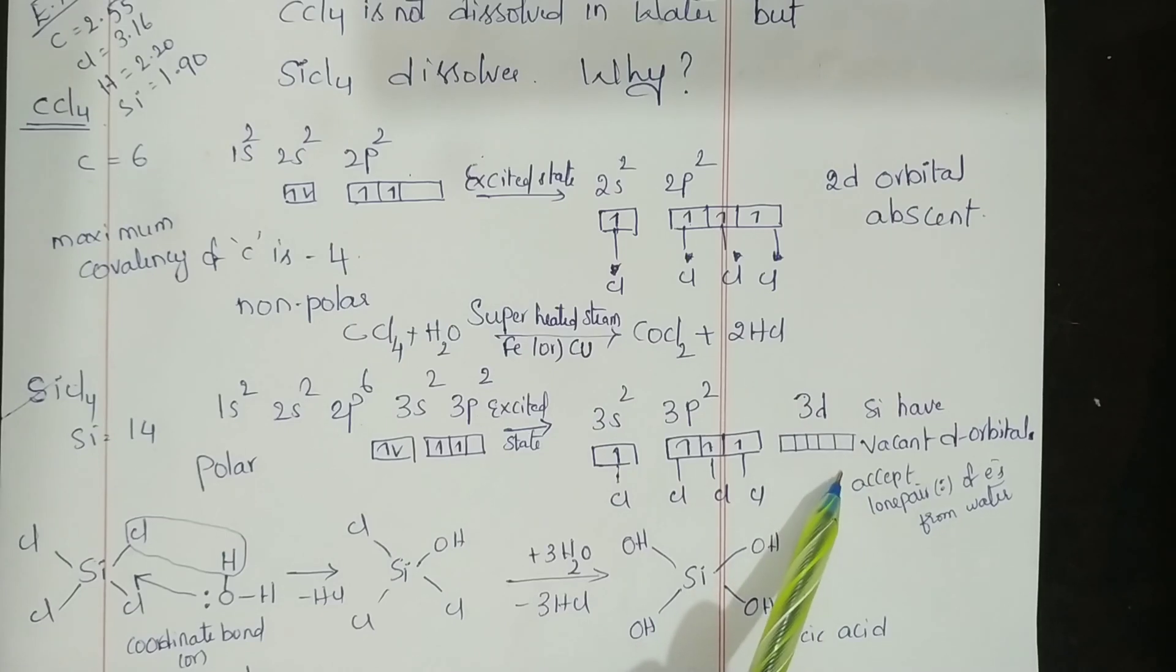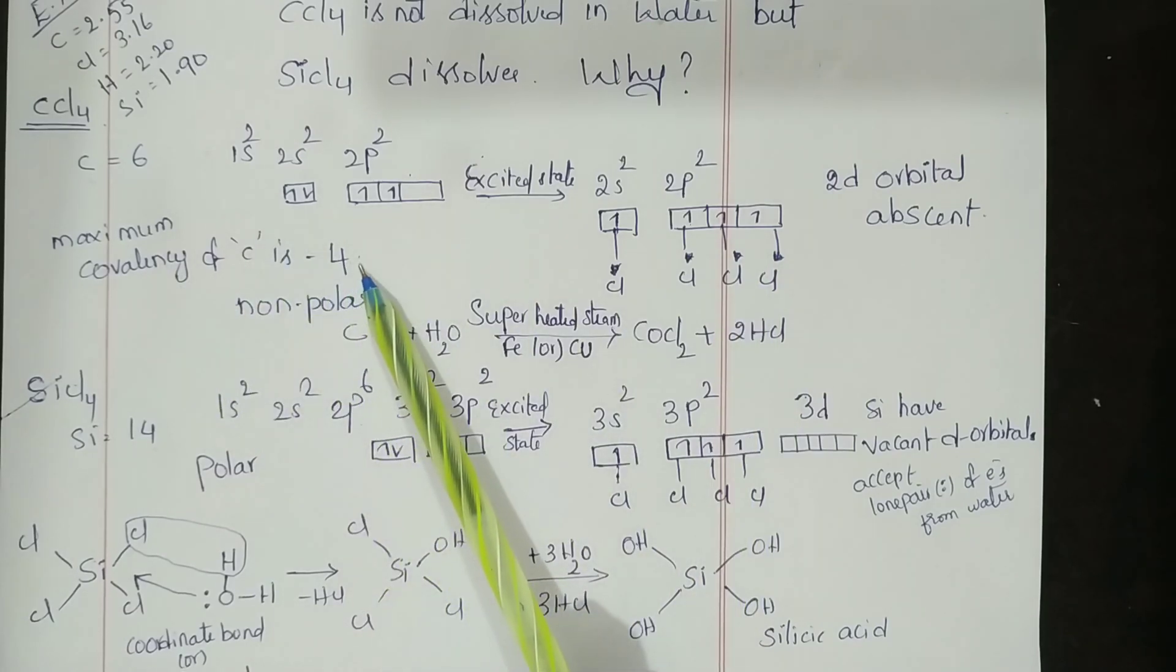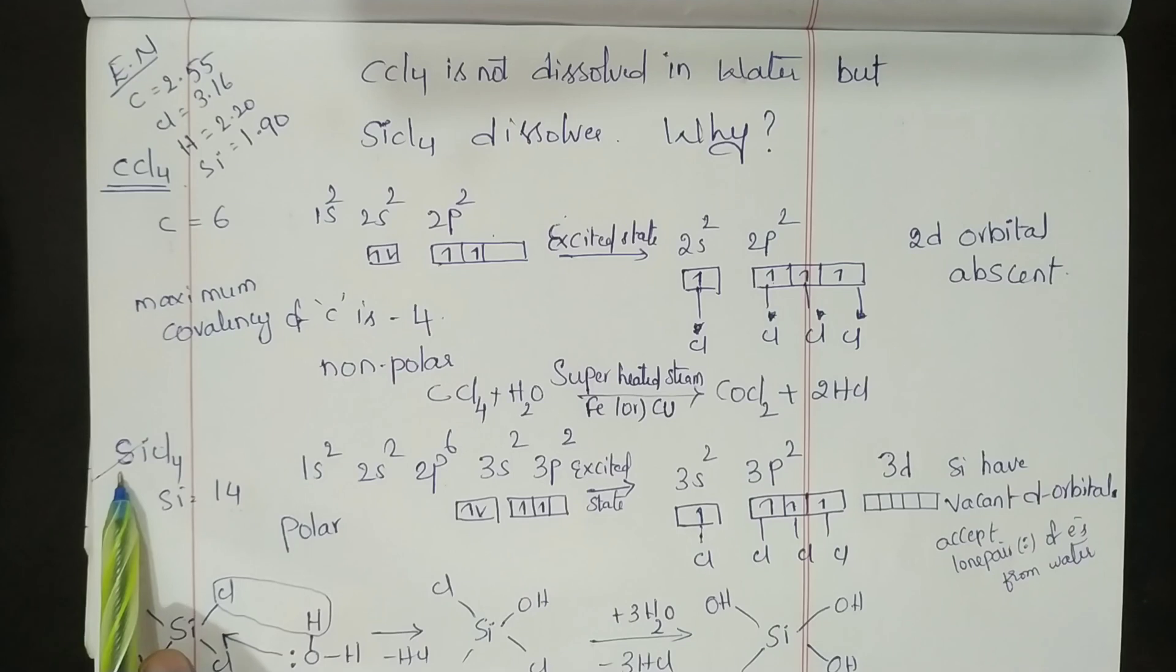But in carbon, the 2d orbital is absent and it has a maximum covalency of four, so it does not easily hydrolyze. But silicon is hydrolyzed because of the presence of 3d orbitals.